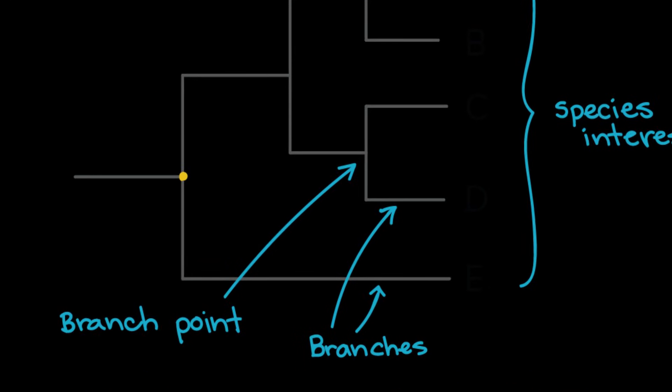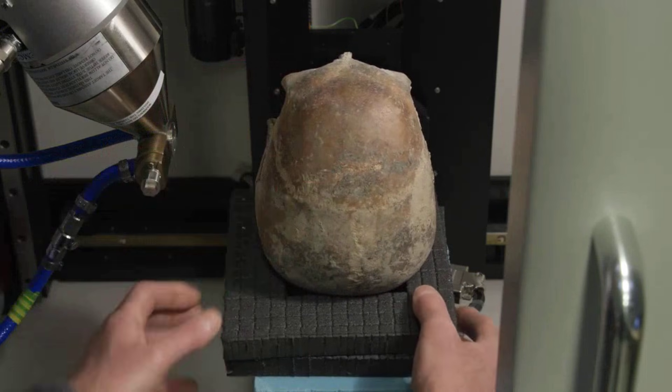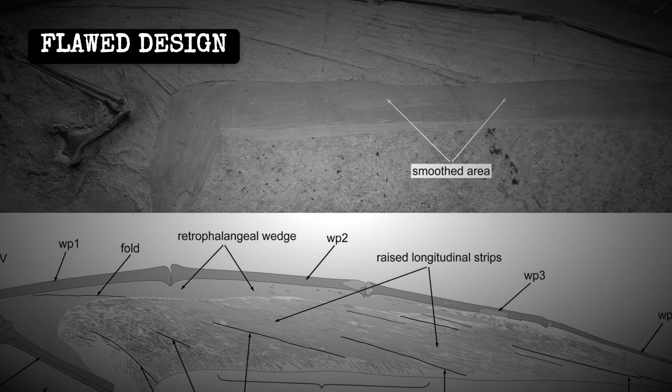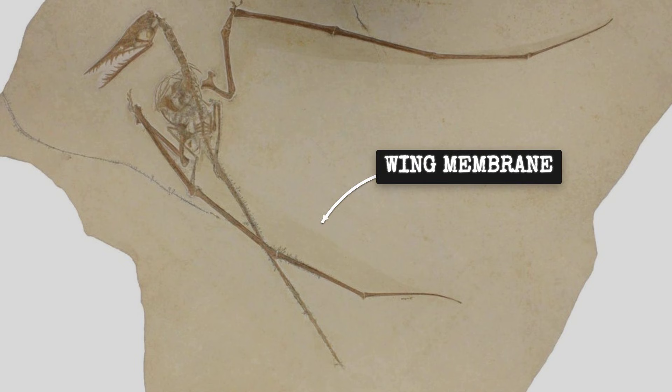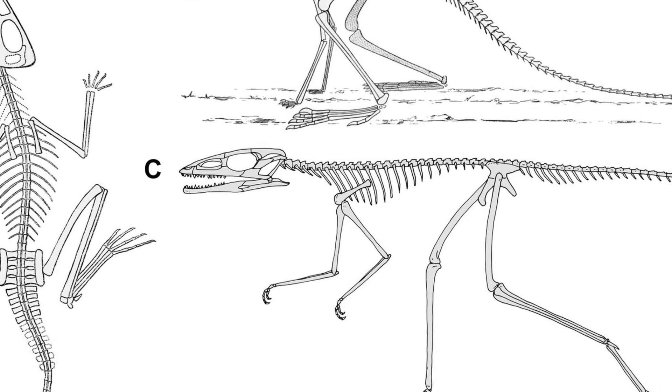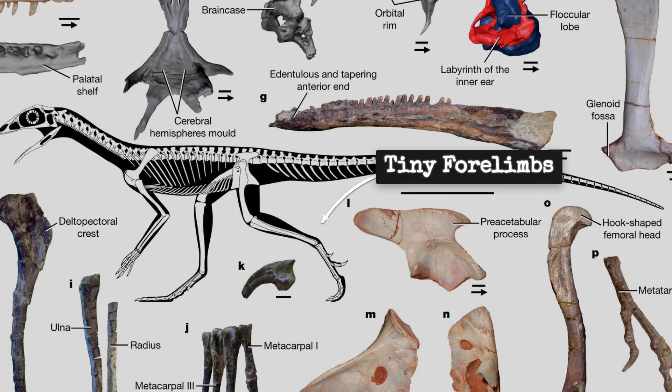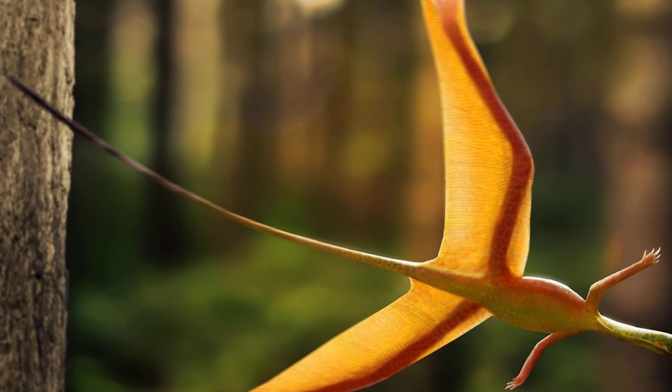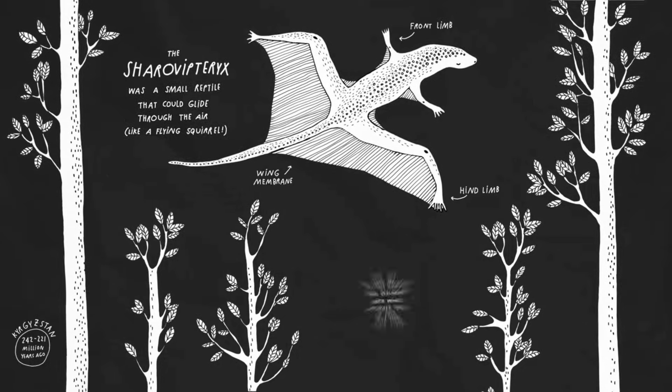Here is the forensic conclusion. Sharovipteryx was not killed by a predator. It was killed by its own design. The membrane striations suggest the wings were always partially deployed, even at rest. That means walking required dragging a wing membrane behind each leg. The elongated hind limbs made running impossible. The tiny forelimbs made climbing nearly impossible. The fixed wing shape made precise landings impossible. This animal was trapped by its own anatomy. It could glide, but only once, and only if everything went perfectly.